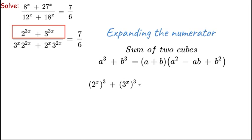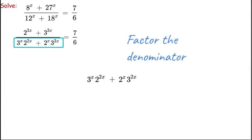Expressing it outward using sum of cubes, where a = 2^x and b = 3^x, we get (2^x + 3^x) × [(2^x)² − 2^x·3^x + (3^x)²]. Now for the denominator, we can see common factors and factor them out as 2^x · 3^x · (2^x + 3^x).